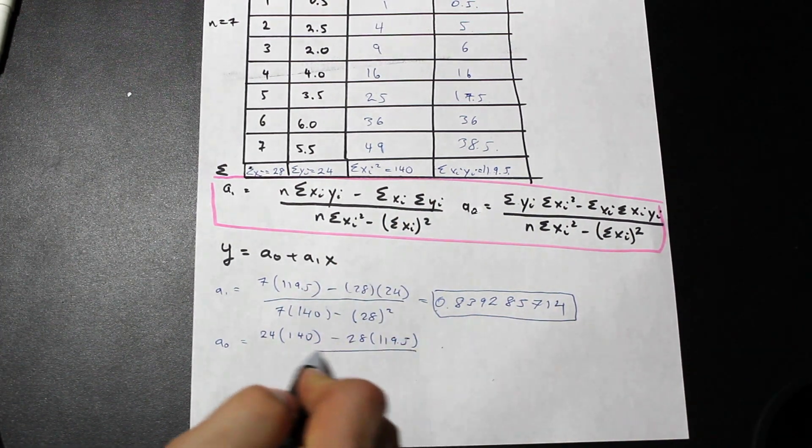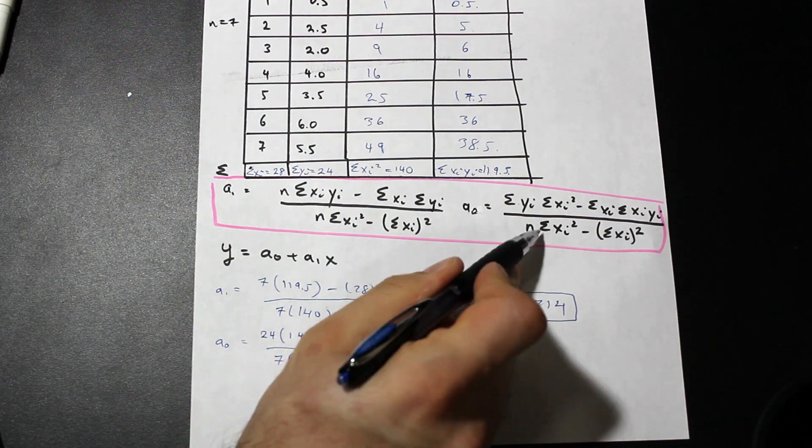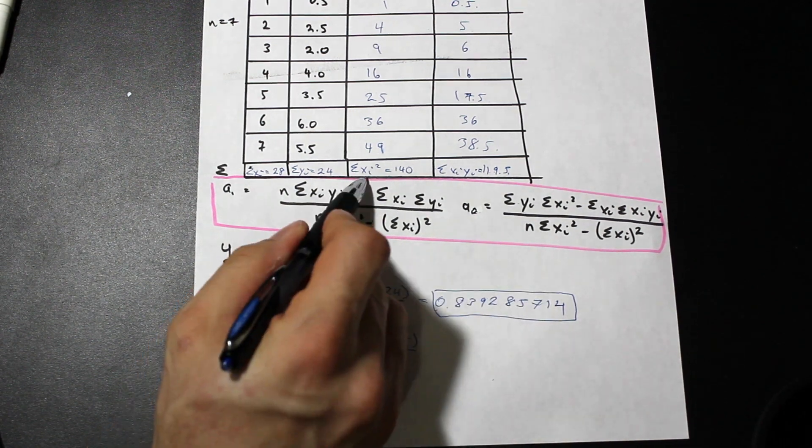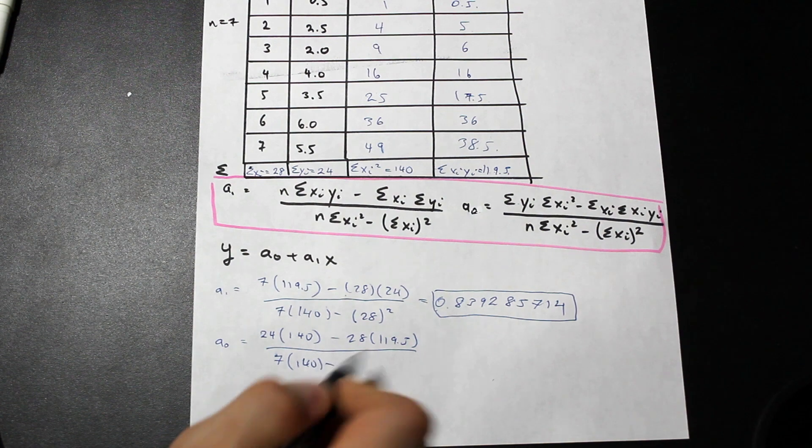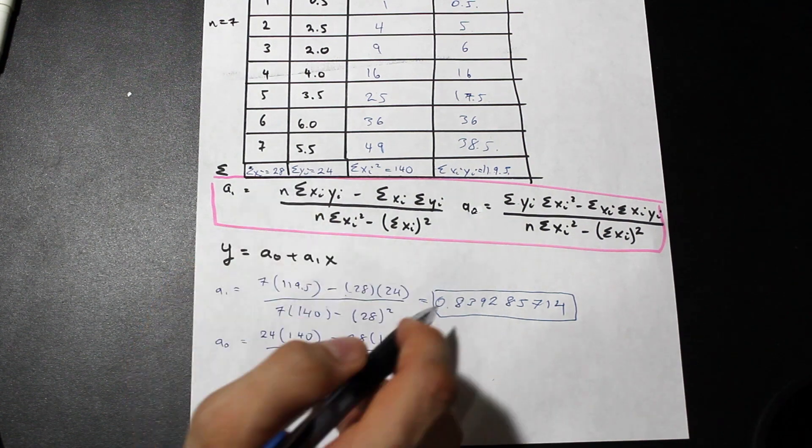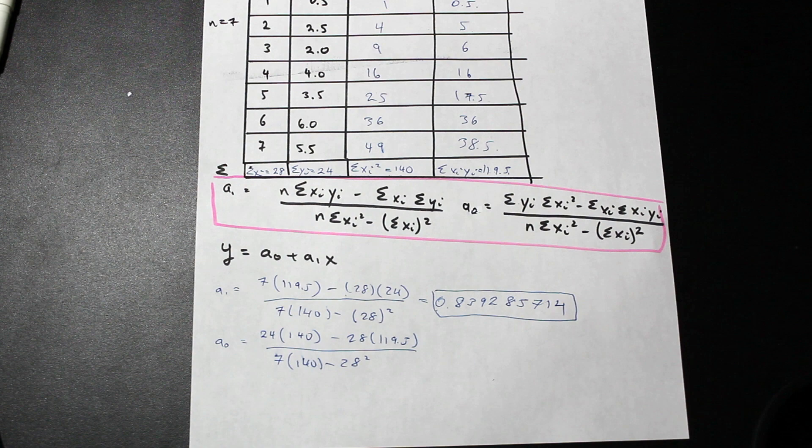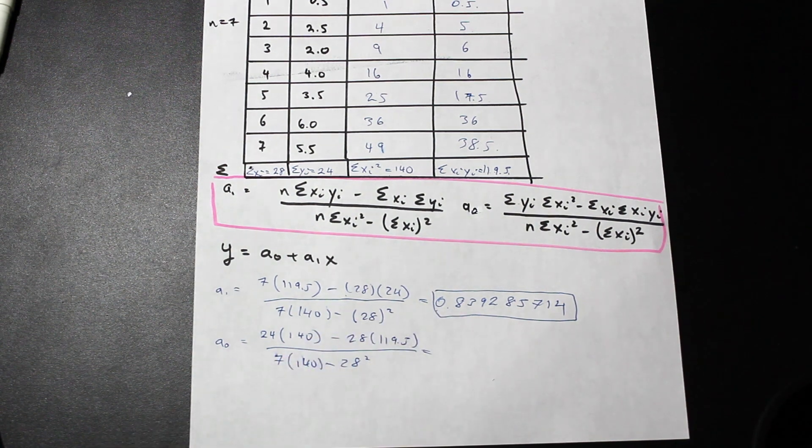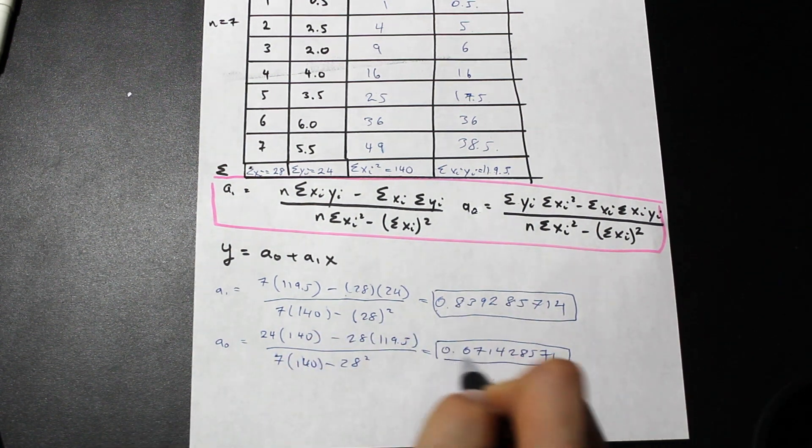And that's all divided by n, which is 7, as we know, times the summation of xi squared, 140. And the rest is straightforward. As I said before, square the 28 here. And that is also going to give us a value of, very good.